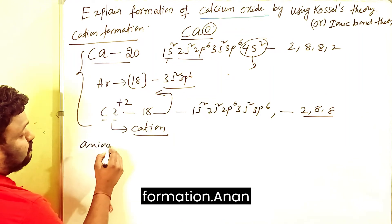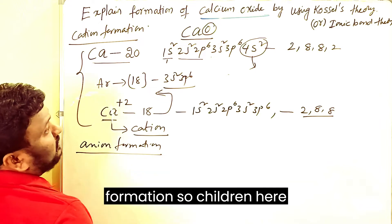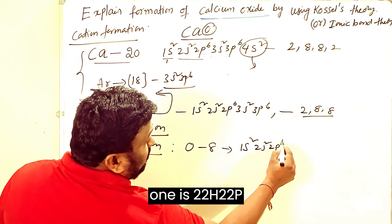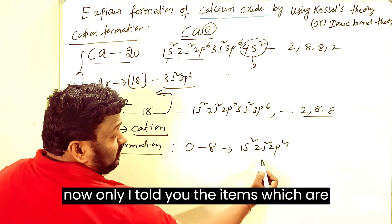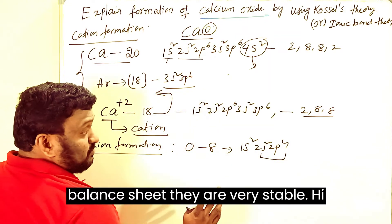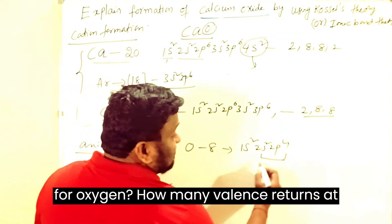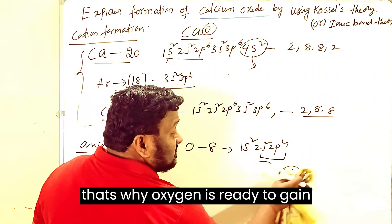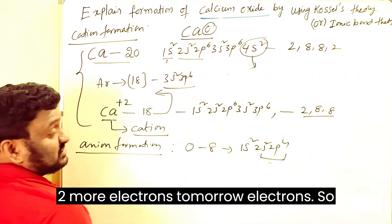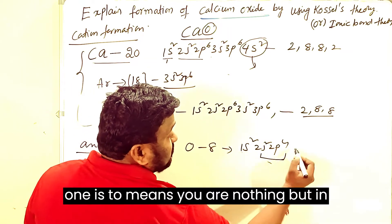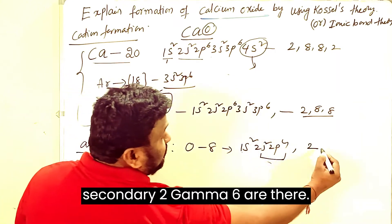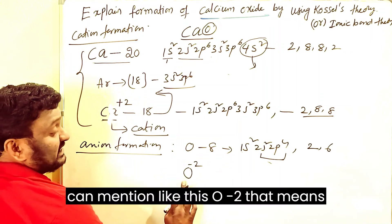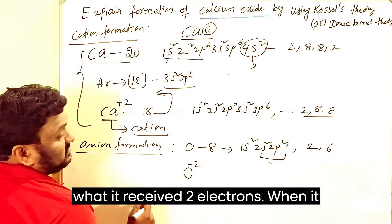Now for anion formation: oxygen has atomic number 8, and its configuration is 1s² 2s² 2p⁴. The valence shell has 2+4=6 electrons. Since atoms need 8 electrons to be stable, oxygen needs 2 more electrons. So oxygen is ready to gain 2 electrons. In textbook notation, oxygen is written as 2, 6.